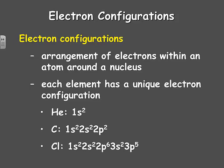Each element has a unique electron configuration. The electron configurations of three elements are shown here: helium, carbon, and chlorine. Helium has two electrons, and they both are at the first S sublevel, so 1S2 is its electron configuration.